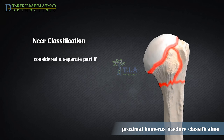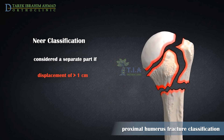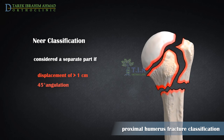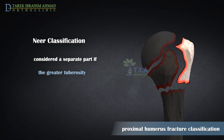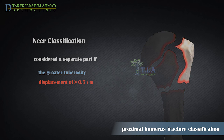In order to qualify as a part, the fragment must have greater than one centimeter of displacement from a normal anatomic position, or 45 degrees of angulation. The greater tuberosity is an exception to this rule, requiring only 0.5 centimeters of displacement to be considered a part.